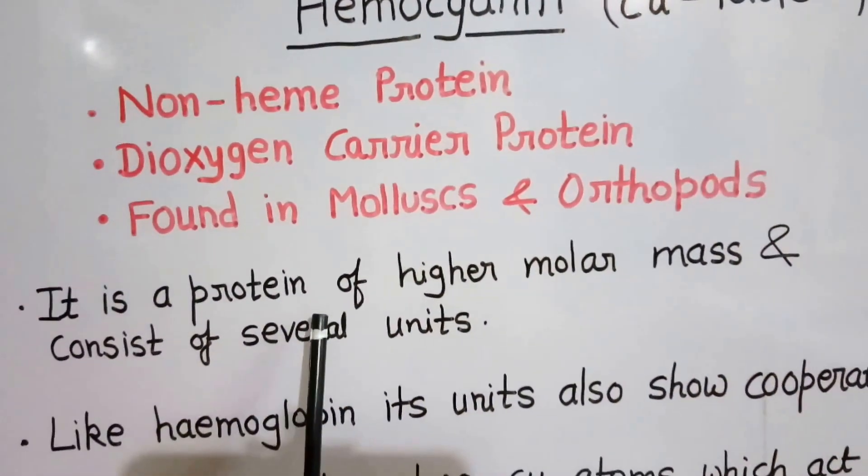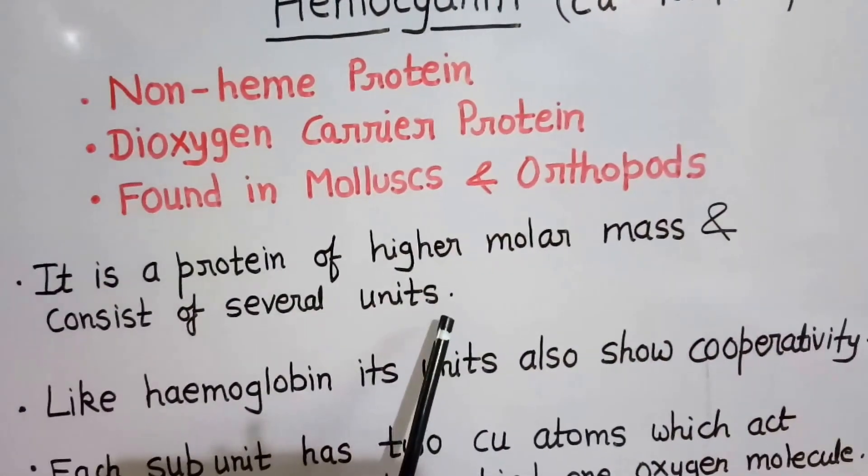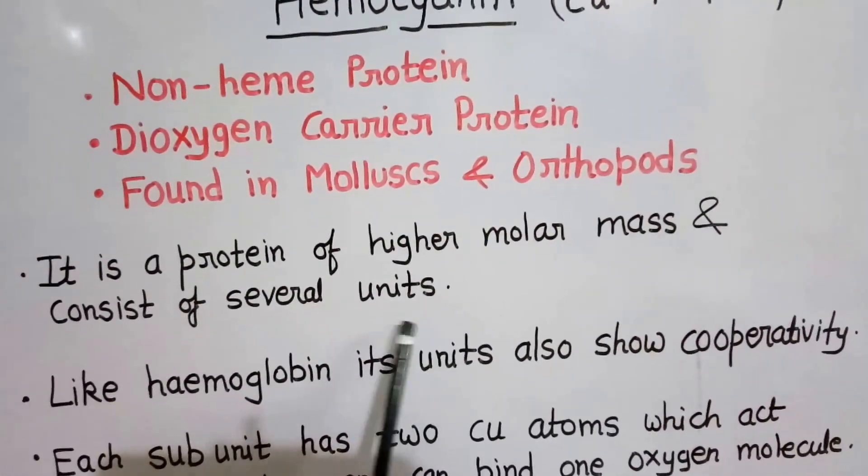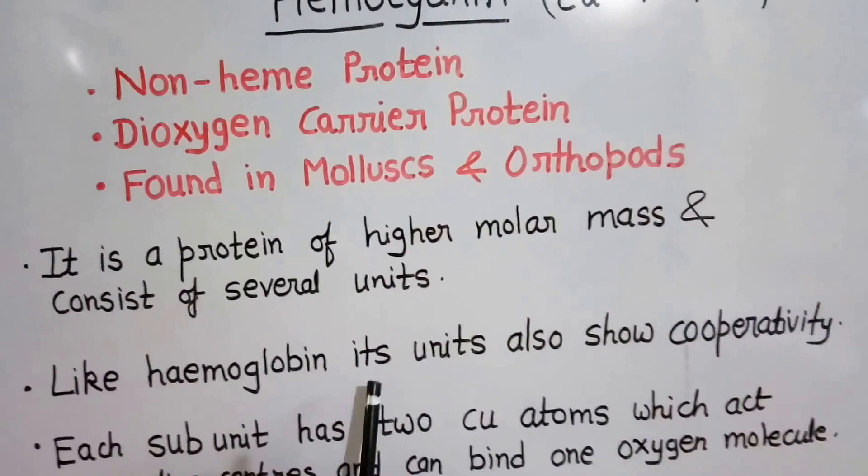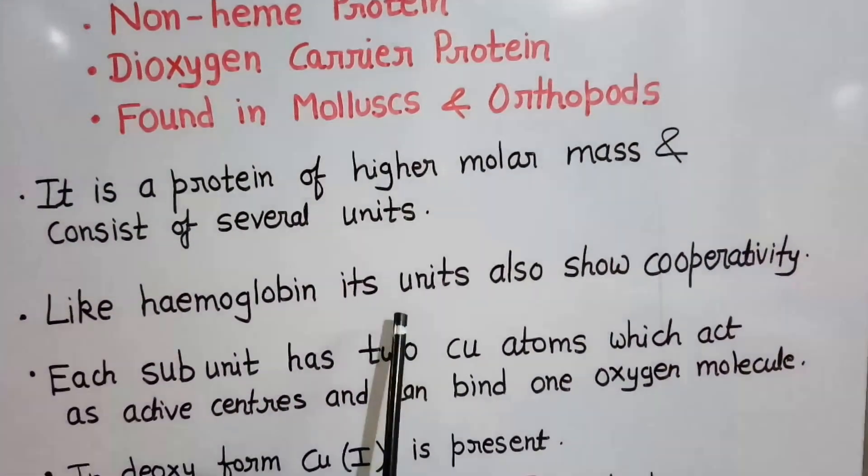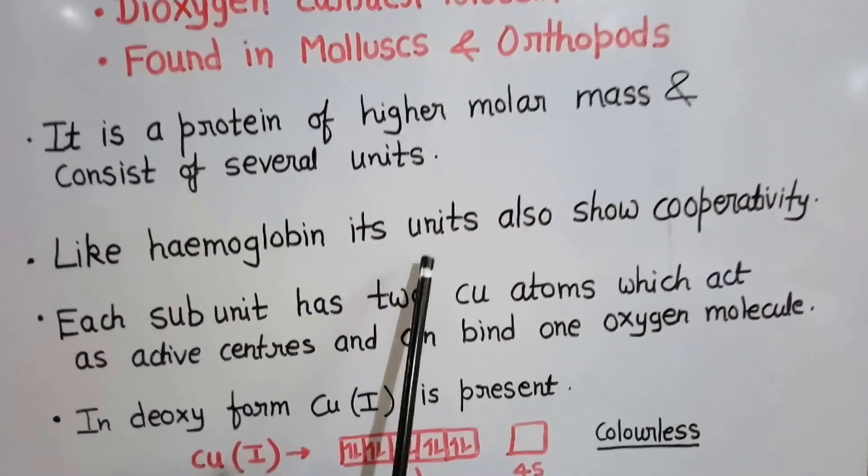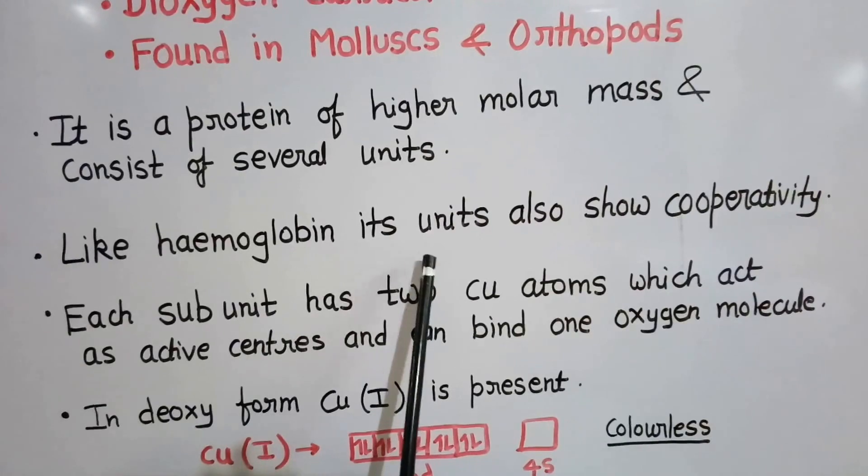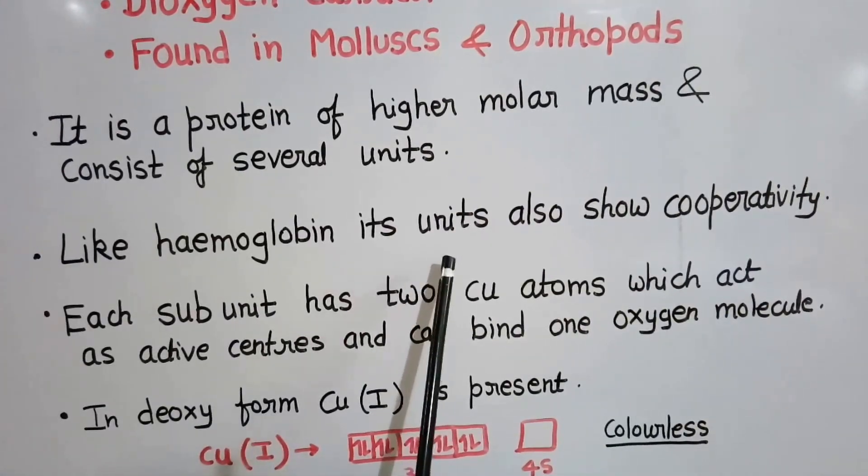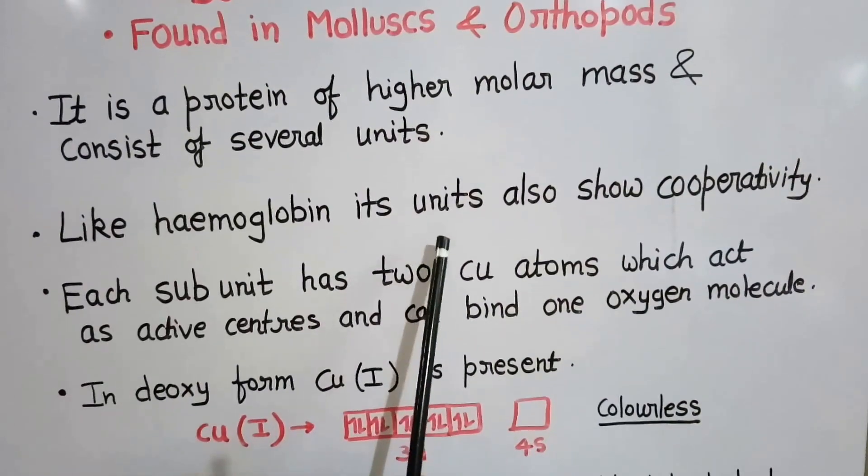Hemocyanin is a protein of higher molar mass and consists of several units. Like hemoglobin, its units act cooperatively. What is cooperativity? It means the binding of oxygen to one unit affects the binding of other units, increasing its ability towards oxygen.